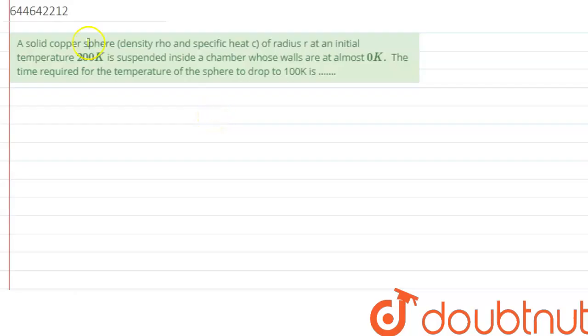A solid copper sphere having density ρ and specific heat c of radius r at an initial temperature of 200 kelvin is suspended inside a chamber whose walls are at almost zero kelvin. The time required for the temperature of the sphere to drop to 100 kelvin is...